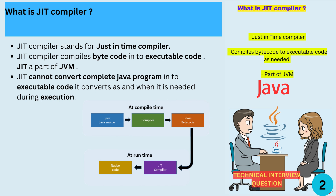This helps to improve performance, because the JIT compiler can optimize the code for the specific platform it's running on. The JIT compiler only converts the parts of the program that are needed at a given time, rather than the whole program.